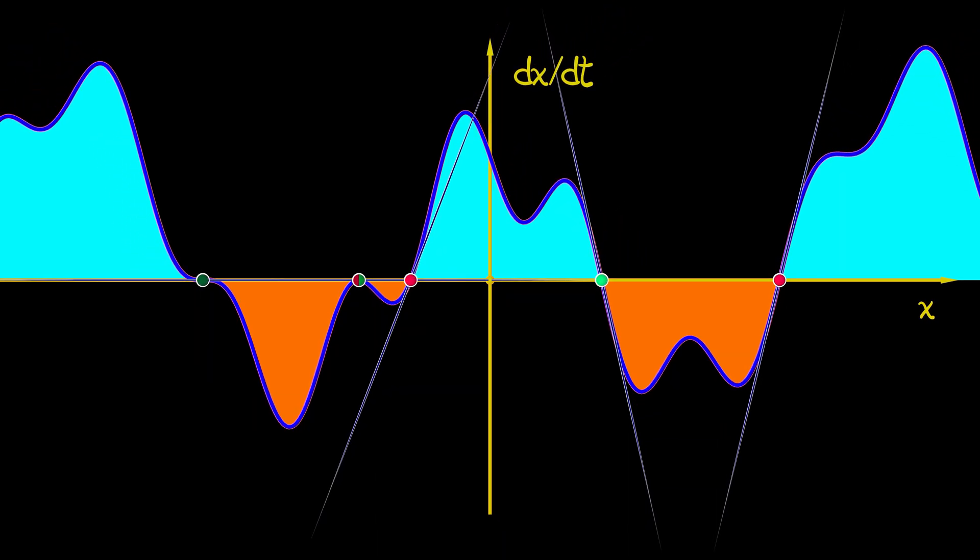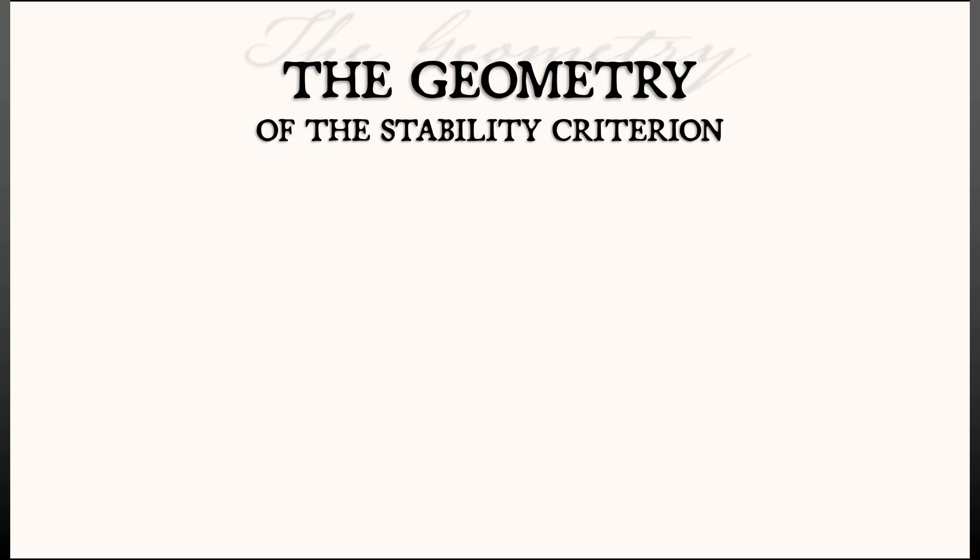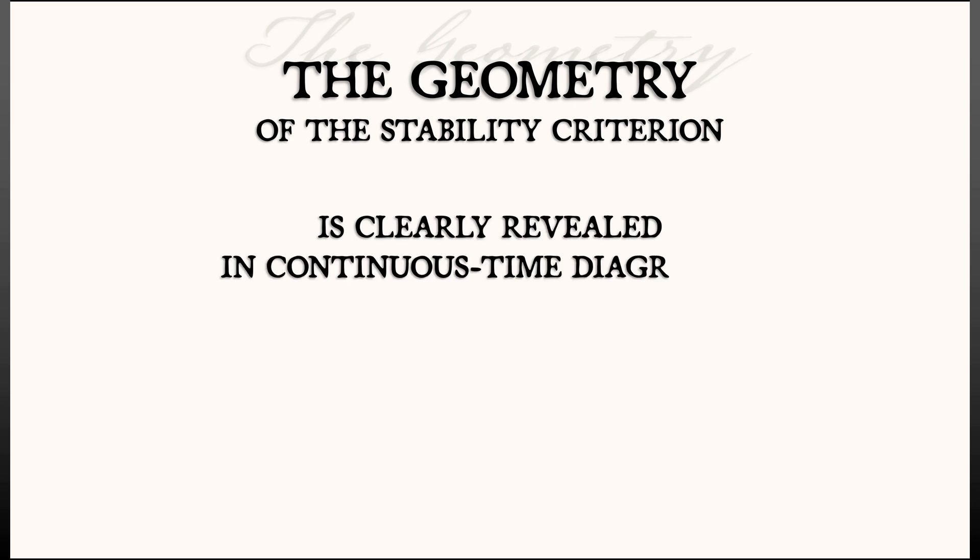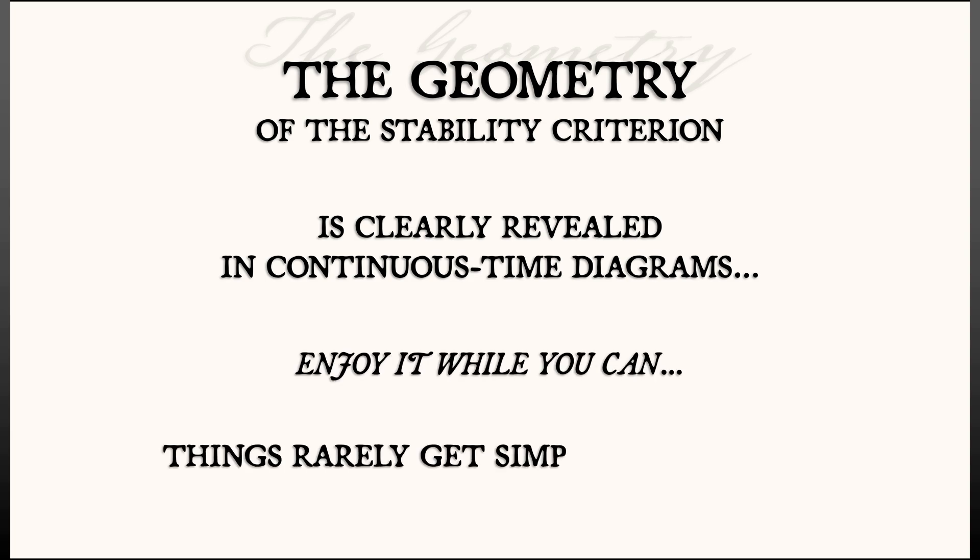That's really just the beginning of things that we can conclude from the diagrams. The geometry of the stability criterion is so clearly revealed when we look at continuous time diagrams, but I emphasize continuous time because things are going to get a little more complicated when we eventually turn to discrete time.